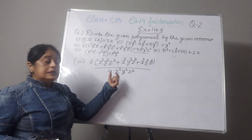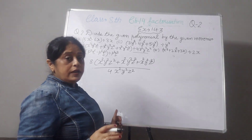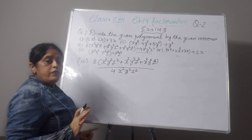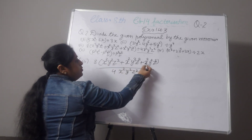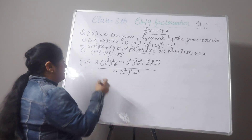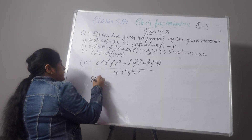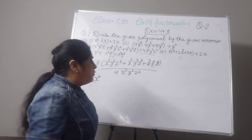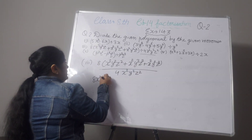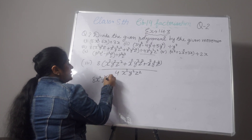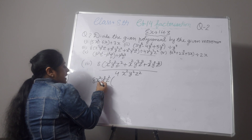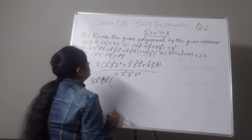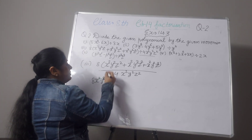First we have to take common from these three terms. For x: the minimum power is 3, then 2, then 2 — so we take x² as common. For y: powers are y², y², y³ — so y² is common. Similarly, z² can be taken as common. Note: by mistake I had written 3 earlier; the correct value to take outside is x².